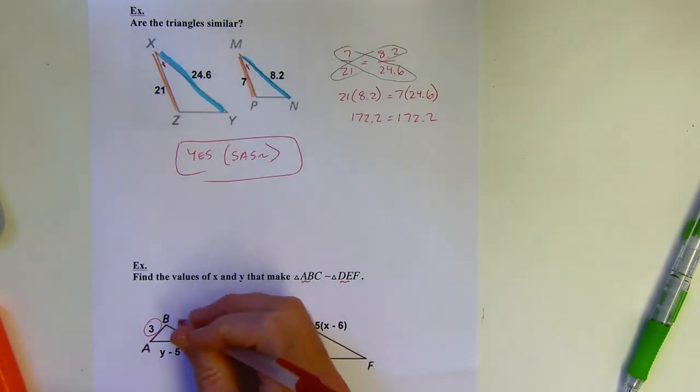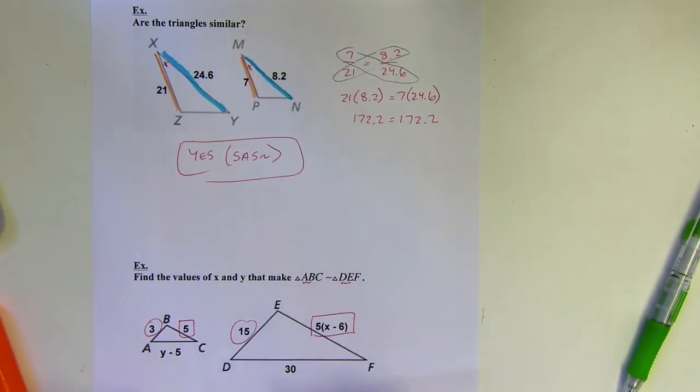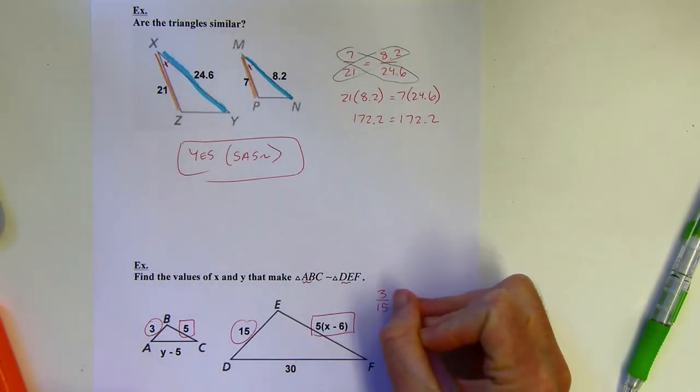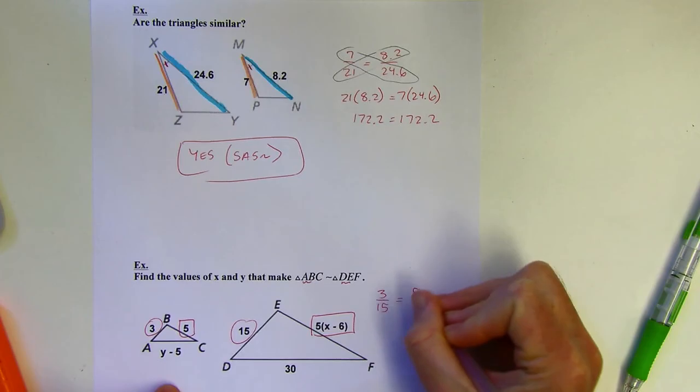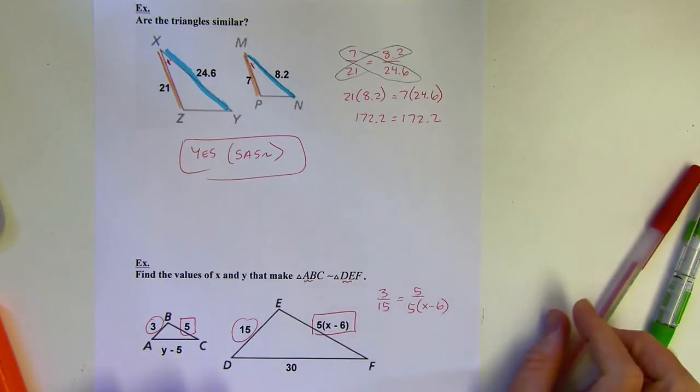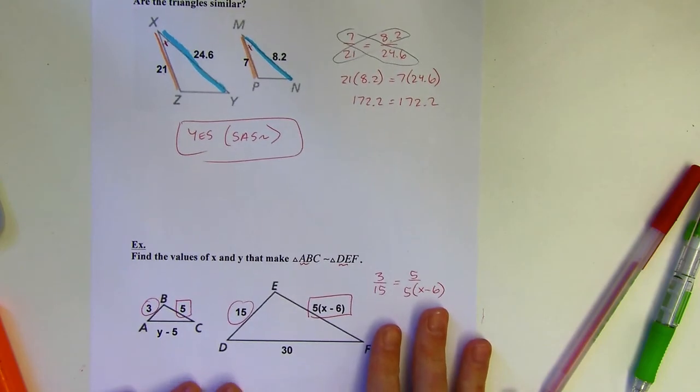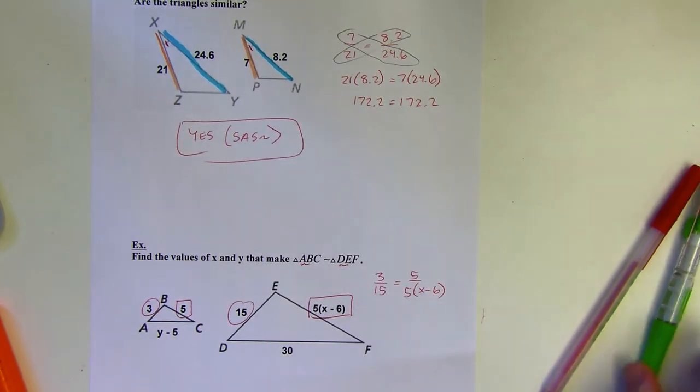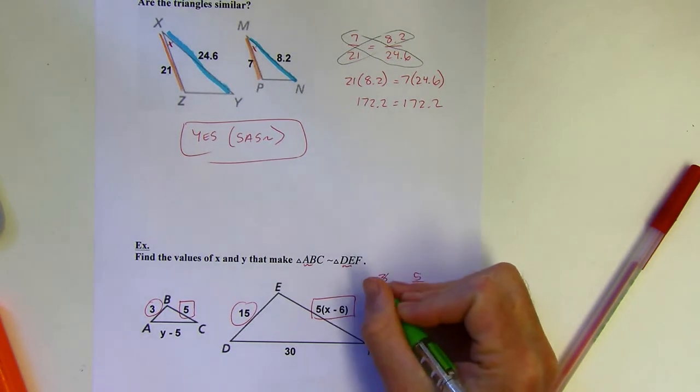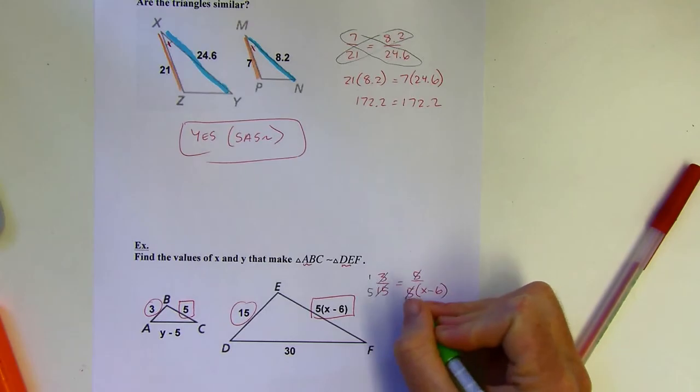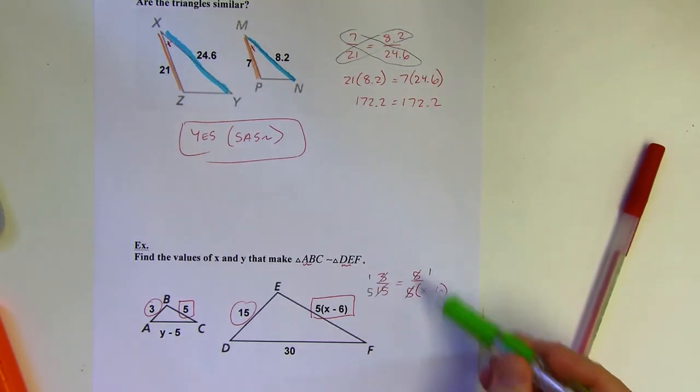3 should be to 15 as 5 is to 5 times quantity x minus 6. 3 is to 15 as 5 is to 5 times x minus 6. Now, you could cross multiply it right now. I'm just noticing, I could do some reducing and make my life a little bit easier. Because I know 3 15ths will reduce to 1 5th. And then also, I can reduce that. When you cancel these out, some people just leave this right side as x minus 6. But you still need a 1 in the numerator to show that x minus 6 should be in the denominator.